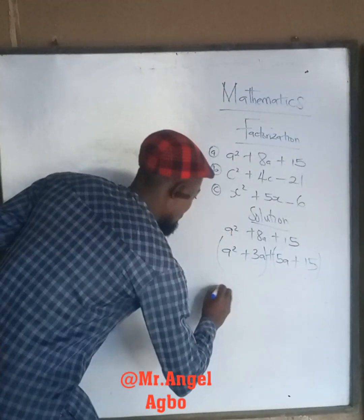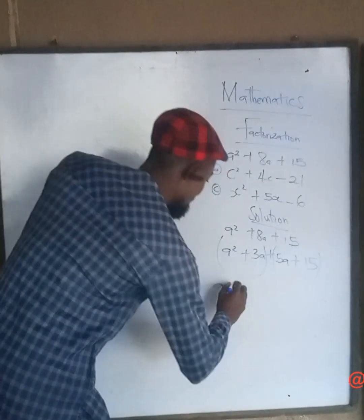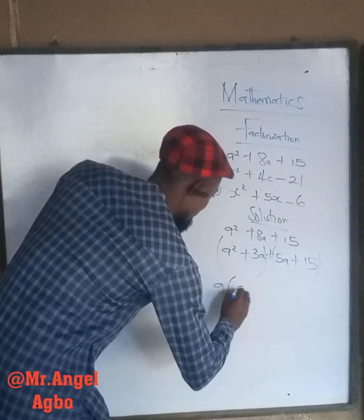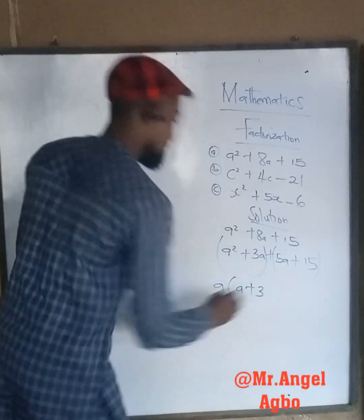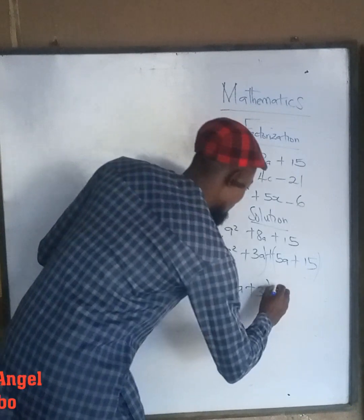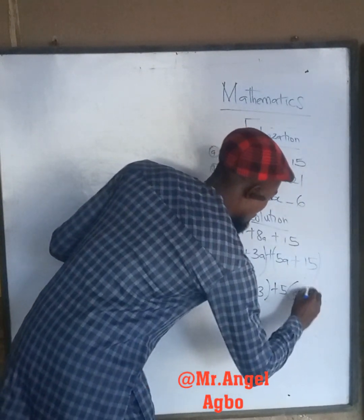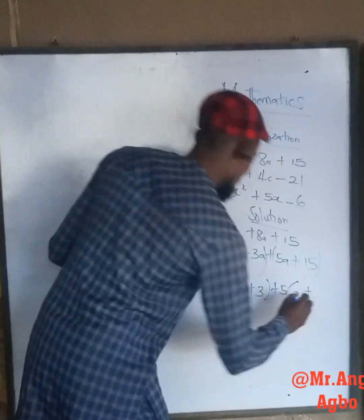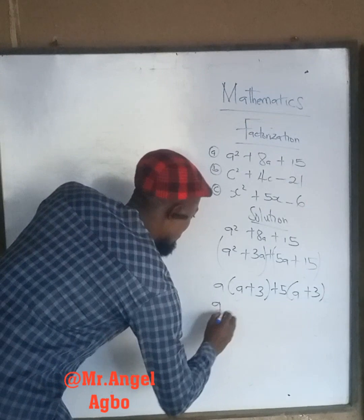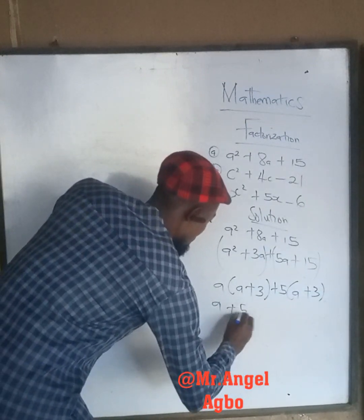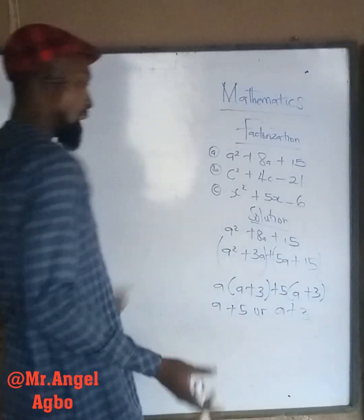Are you following me? Now A outside, bracket, A inside, plus 3, close the brackets. Again, plus 5, bracket, A plus 3, brackets. We'll have A plus 5, or A plus 3. Let's use one of these because they are equal.